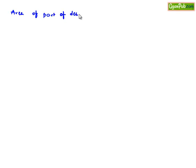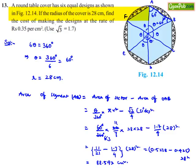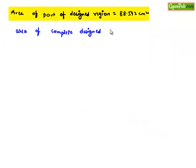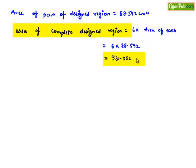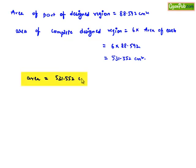Therefore, the area of one part of the designed region is equal to 88.592 cm². Since all the designed regions are similar and there are 6 of them, the area of the complete design region is equal to 6 times 88.592, which is 531.552 cm².